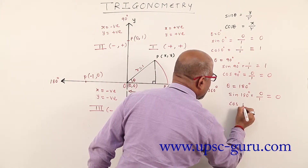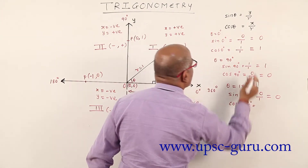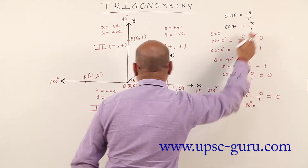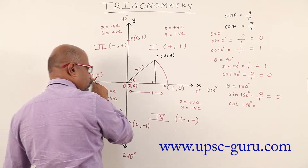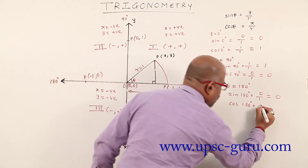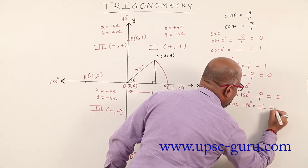Cos 180 degree: formula is x upon r. X is minus 1, r is always 1, so we get minus 1.